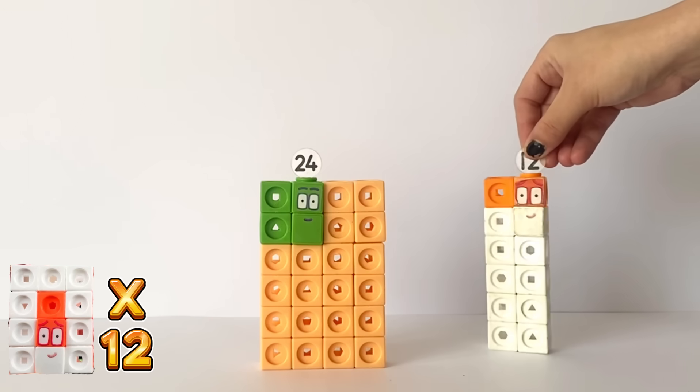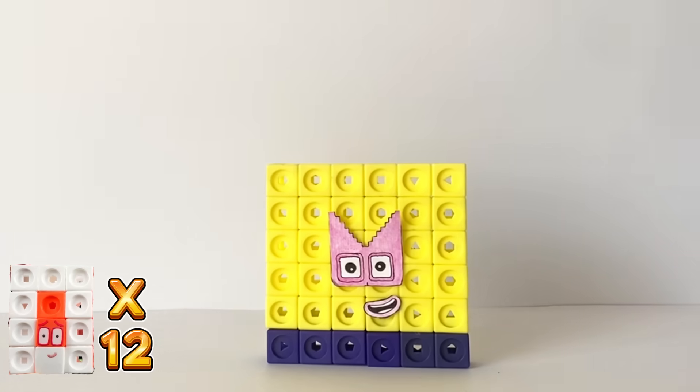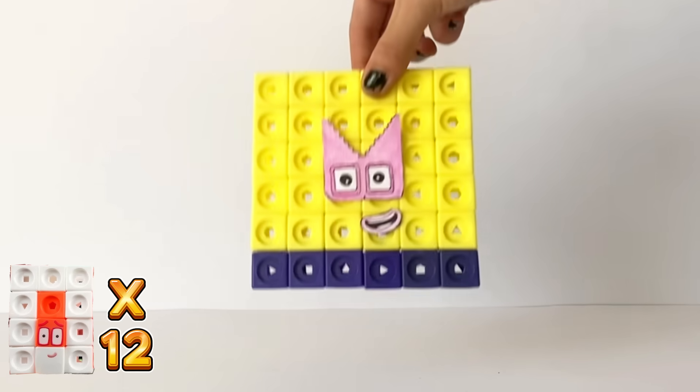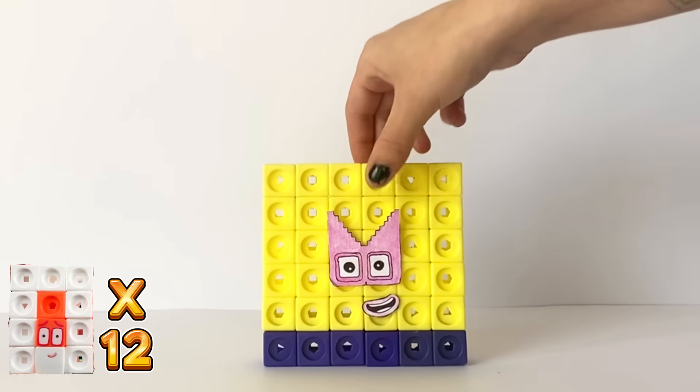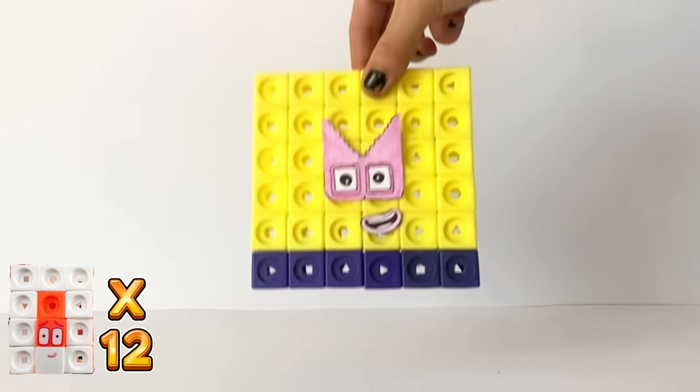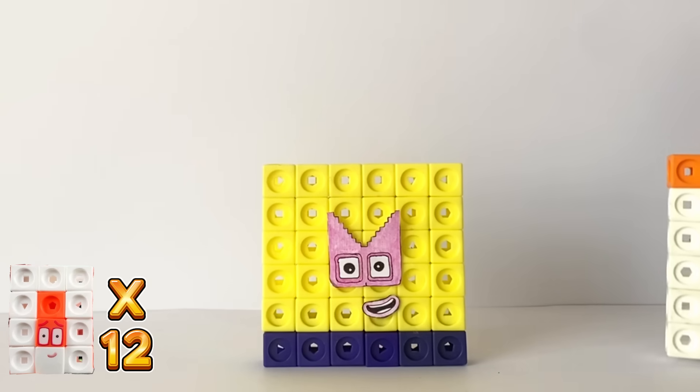Next if we add another 12, 3 lots of 12 are 36. NumberBlock 36 has a pink Step Squad mask because 36 is the 8th member of the Step Squad Club. And 36 is also a 6 by 6 square, that's why 36's eyes are also square.